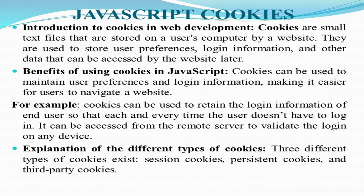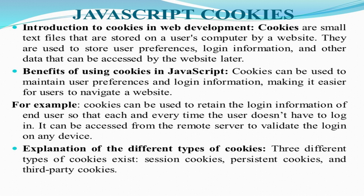So JavaScript cookies — we are talking about the introduction to cookies in web development. Cookies are small text files stored on a user's computer — the end user who is going to the internet to obtain certain information. This cookie is being stored on the user's computer by the website they visit. They are used to store user preferences, login information such as username, password, mobile number, email ID, and other data that can be accessed by the website at a later time.